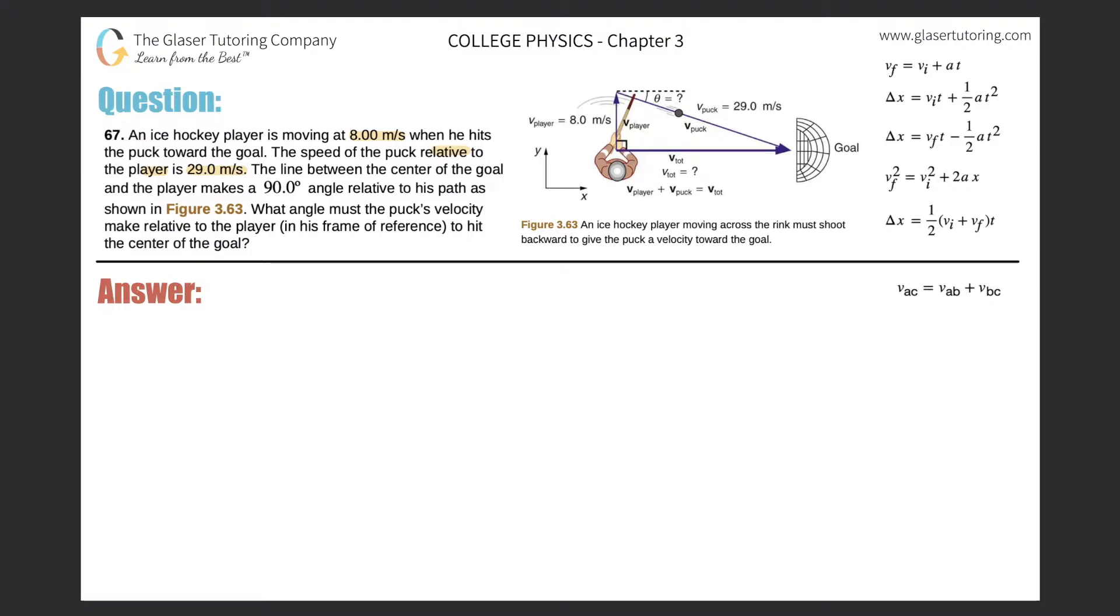The line between the center of the goal and the player makes a 90 degree angle relative to his path as shown in figure 3.63. What angle must the puck's velocity make relative to the player to hit the center of the goal?